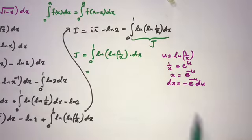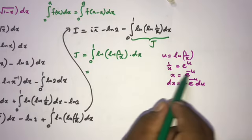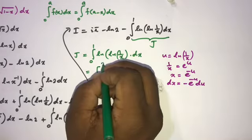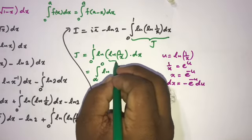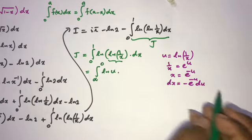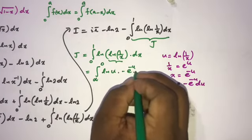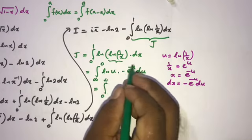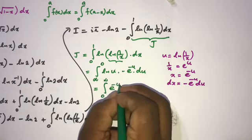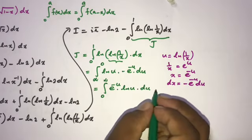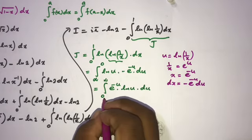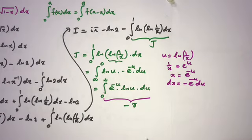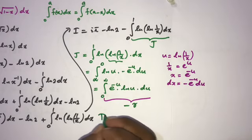Checking the limits: when x approaches 0, u approaches infinity; when x approaches 1, u approaches 0. Substituting, ln(1/x) becomes ln(u), and dx becomes −e^(−u) du. Changing the limits cancels the minus sign, giving J = the integral from 0 to infinity of e^(−u) ln(u) du. This is a familiar integral equal to the negative Euler-Mascheroni constant, −γ.